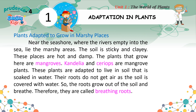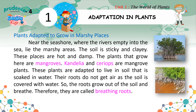Plants adapted to grow in marshy places: Near the seashore, where the rivers empty into the sea, lie the marshy areas. The soil is sticky and clay, and these places are hot and damp. The plants that grow here are mangroves. Candelia and Cereops are mangrove plants. These plants are adapted to live in soil soaked in water. Their roots do not get air as the soil is covered with water, so the roots grow out of the soil and breathe — they are called breathing roots.